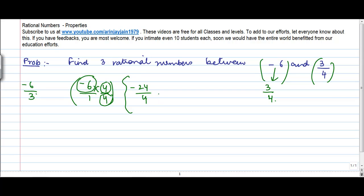Now I am at a situation where I have minus 24 by 4 and 3 by 4. And if I have to find rational numbers between these two, it's very easy. I move from minus 24 to 3.